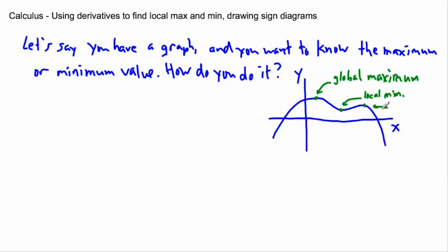This right here, however, will be a local max. That's because if you just zoom into this area, it looks like a maximum. But if you zoom way out and take a look at the whole graph, it can actually be higher. So we're mainly going to be concerned with local mins and local maxes. This point right here is also technically a local maximum — it just happens to also be the global maximum.